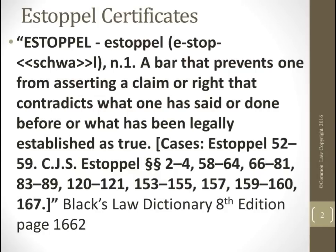Estoppel is a bar that prevents one from asserting a claim or right that contradicts what one has said or done before, or what has been legally established as true — that's Black's Law Dictionary, 8th edition. What has legally been established as true is that there's a straw man with a name similar to yours, and these thieves want to steal some of that straw man's money, getting you to be the surety so they can assault you.